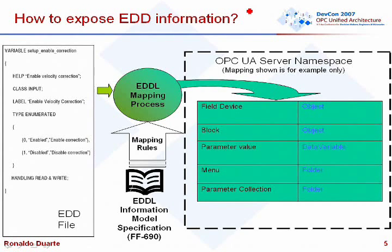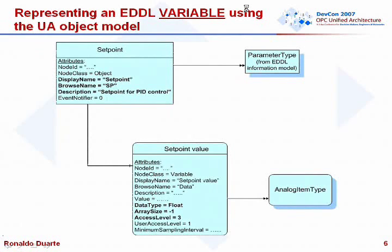Here is an example of how a parameter from a function block inside the device is represented — specifically a set point parameter. The information model says to create a variable to store the parameter value. The set point value is an OPC UA variable that holds the parameter value retrieved from the fieldbus network. The attributes shown in bold are the ones coming straight from the EDD; the server defines the other attributes based on OPC UA specifications.